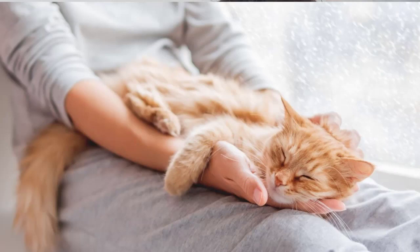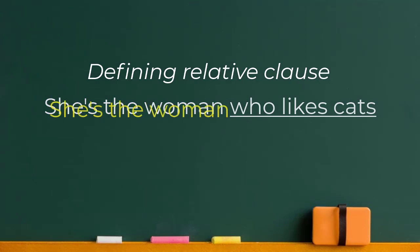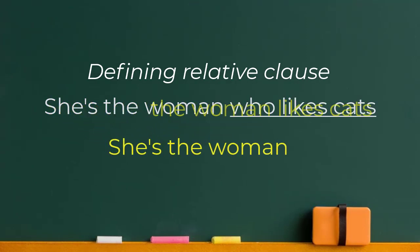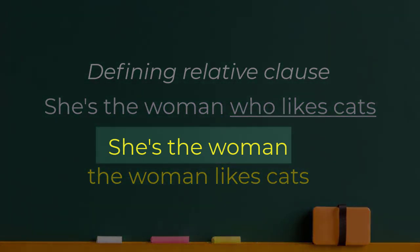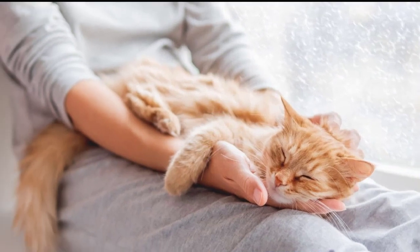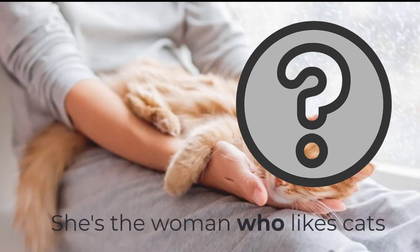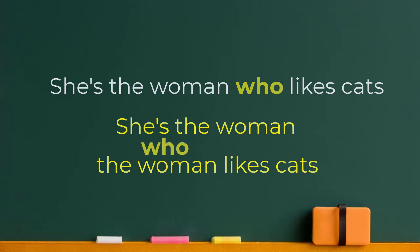Let's have a quick review of the rules of defining relative clauses in case you're feeling confused. A defining relative clause looks something like this: 'She's the woman who likes cats.' This is one sentence with two clauses — 'She's the woman' and 'the woman likes cats.' It's a defining relative clause because the first clause, 'she's the woman', doesn't make sense without that extra information. Which woman? The woman who likes cats. You can see that 'who' takes the place of the noun in the second clause, so it's called a relative pronoun.